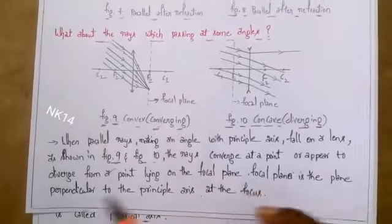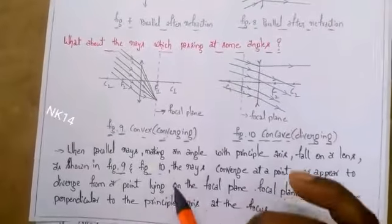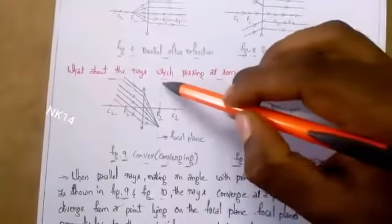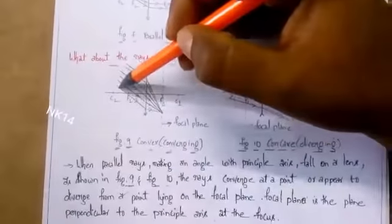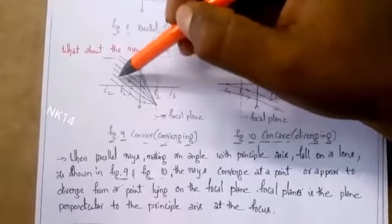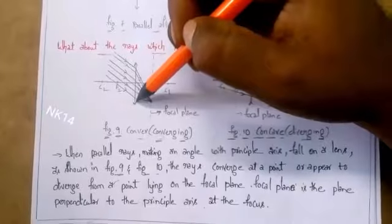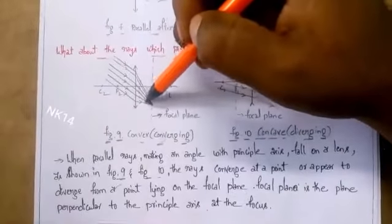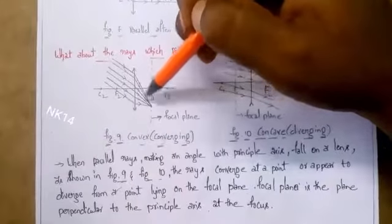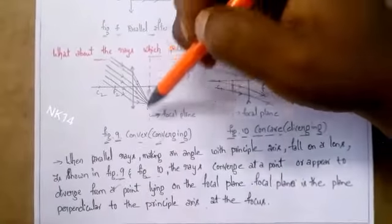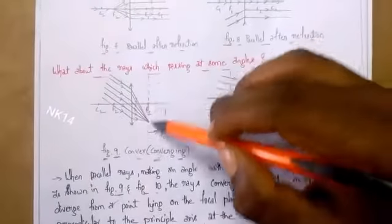The focal plane is the plane perpendicular to the principal axis at the focus. In the diagram, the rays are parallel but making an angle. After refraction through the convex lens, they get converged — we know the convex lens converges rays. This convergence point lies on the focal plane, which is perpendicular to the principal axis.